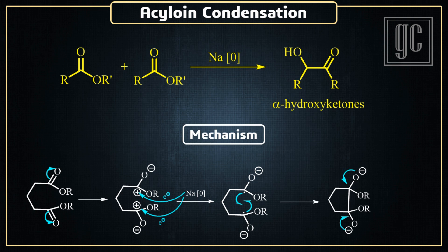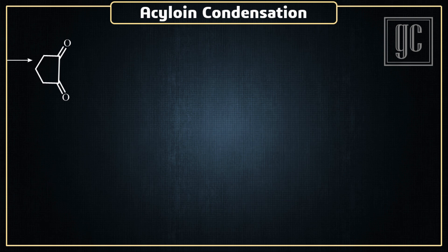Now the negative charge on oxygen comes back and forms a double bond between carbon and oxygen. As a result, the alkoxy group leaves the molecule as a leaving group and a cyclic 1,2-diketone forms as the product. The double bond again moves to the high electronegative atom, that is oxygen, and as a result the carbocation is formed again.